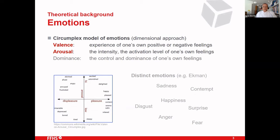There are dozens if not hundreds of theories of emotions, so one important thing is to define what kind of theory or definition of emotion you use. We decided on the circumplex model of emotions — a dimensional approach. One of the best-known versions is from Russell and Feldman Barrett, who use valence and arousal as two dimensions. Valence is one's own positive or negative feelings, and arousal is the intensity or activation level of one's own feelings.